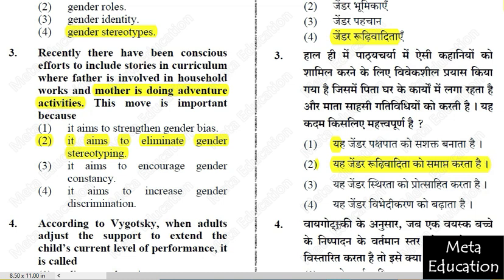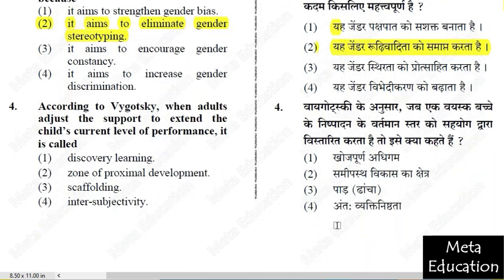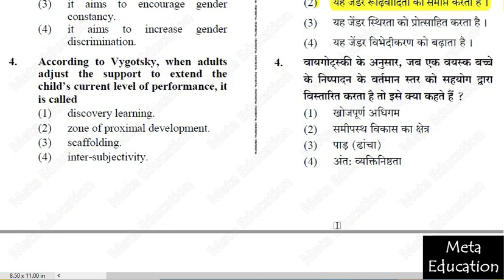Question 4: According to Vygotsky, when adults adjust the support to extend the child's current level of performance, it is called — 1) Discovery Learning; 2) Zone of Proximal Development; 3) Scaffolding; 4) Inter-subjectivity. The correct answer is option 3: Scaffolding (pada/dhaacha).